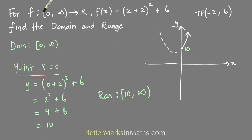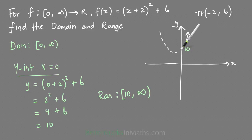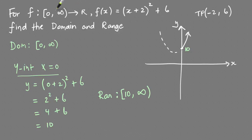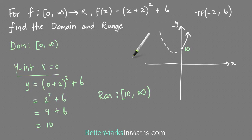If the 0 in the domain had a round bracket, that would mean an open circle on the graph at that point, meaning the point isn't included, and so the y-value of 10 would also have a round bracket. You always have to pay attention to what kind of brackets are on the domain in this type of question.